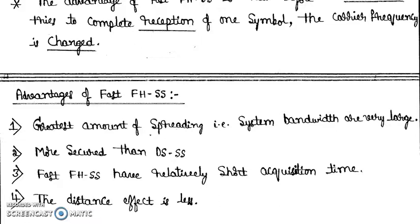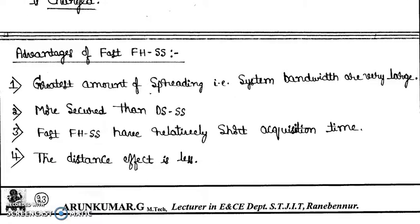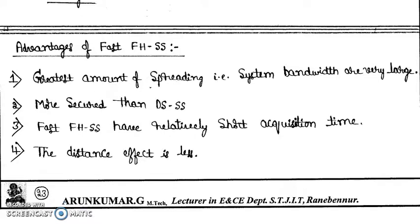Now you can see the advantages of fast FHSS. So the system bandwidth is very large, more secured than your direct sequence spread spectrum. It is more secured than slow hopping spread spectrum also. So it has short acquisition time, the distance effect is less.